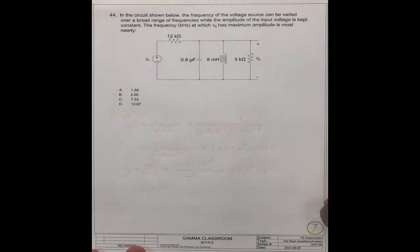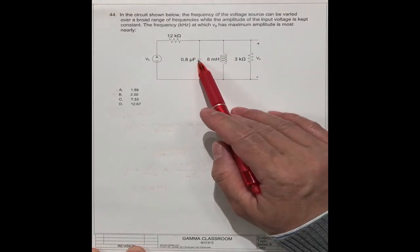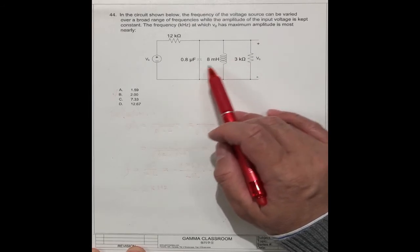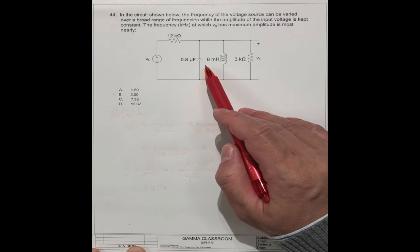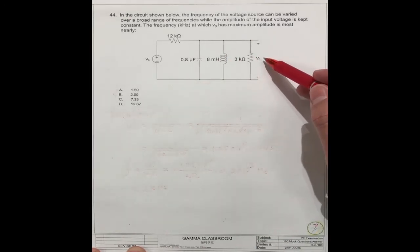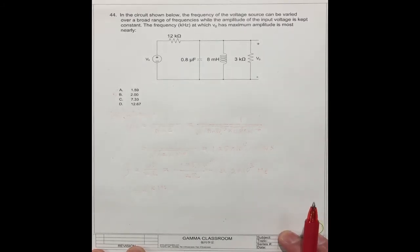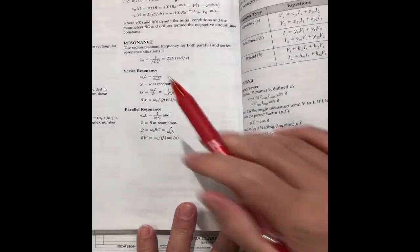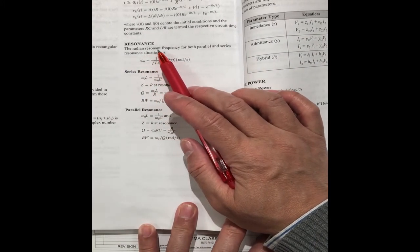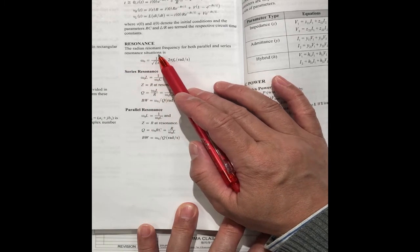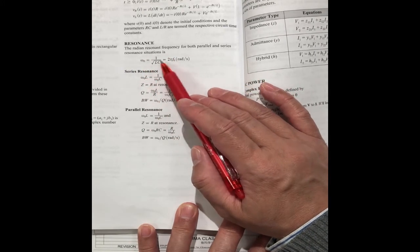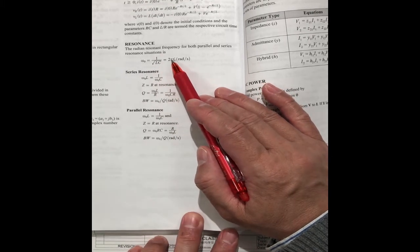We know this question is tested using an RLC circuit. Only when the capacitor and inductor connection is a parallel connection, when the two — capacitor and inductor — are in resonance, the output v₀ gives the maximum amplitude. The resonant frequency for both parallel and series resonance situations is omega₀ equals 1 divided by root LC, which equals 2 pi F.